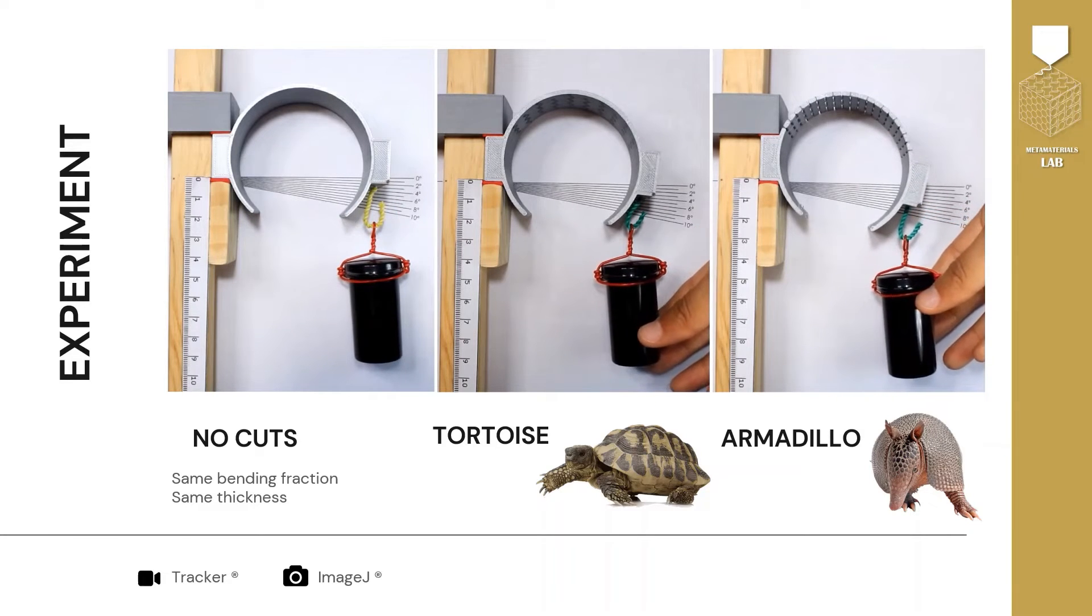The second one is the tortoise one and the third one corresponds to the armadillo. You can see how the armadillo sample achieves the largest angular displacement.